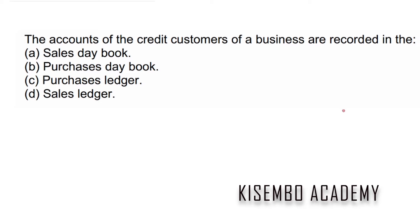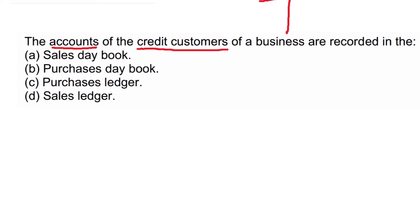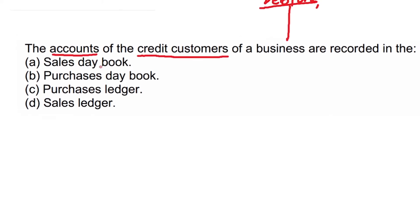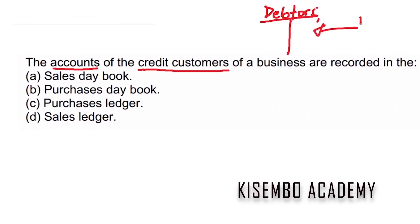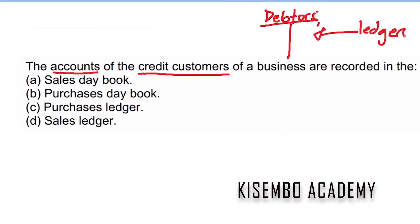The accounts of credit customers — credit customers are people that come to our premises and take things without paying cash. When we do their accounts, their T-accounts, these are recorded in ledgers. Their T-accounts are always recorded in ledgers, meaning we are going to put those in the sales ledger.